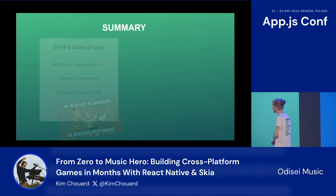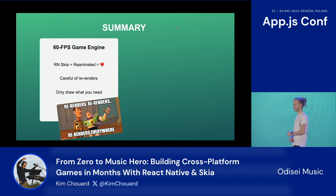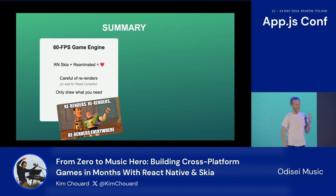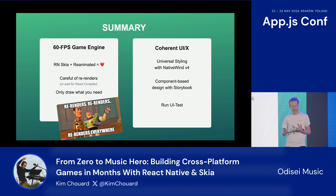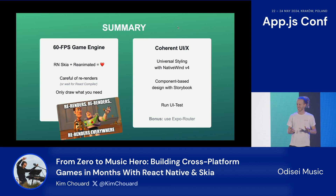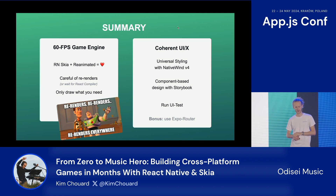So let's summarize. If you want to build a 60 FPS game engine, Skia and Reanimated are very powerful and can really help you do that. Just be careful of re-renders — or wait for the React compiler — and only draw what you need. If you want a coherent UX, we got very close to universal styling thanks to NativeWind, and you can use a component-based approach with Storybook. And use Expo Router — I'm not talking about it because Evan Bacon does it better than I do, but it gives you a lot of coherent concepts across the different platforms.